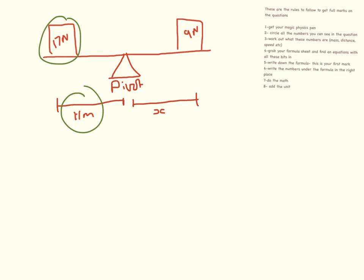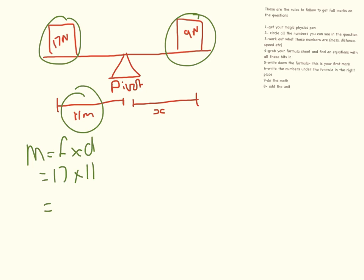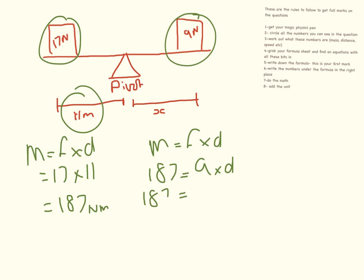Circle all of the numbers in the question. If you've looked at a few examples and think you're okay, pause the video, have a go yourself, and then come back to check. Moment equals force times distance: 17 times 11 equals 187 newton metres. Then 187 equals 9 times distance, so 187 divided by 9 equals the distance — which is 21 metres.